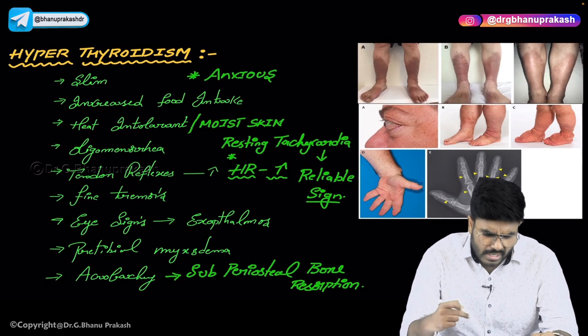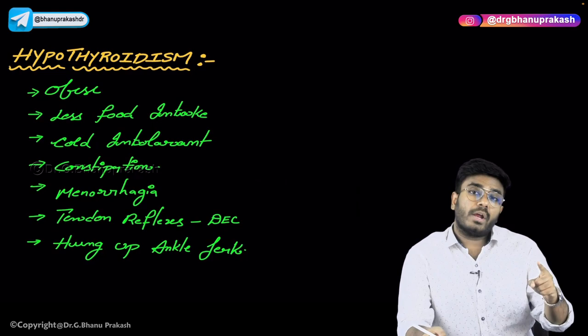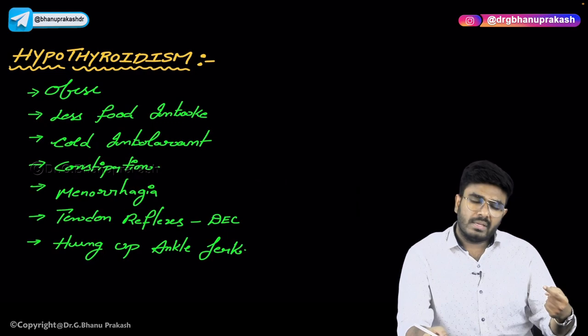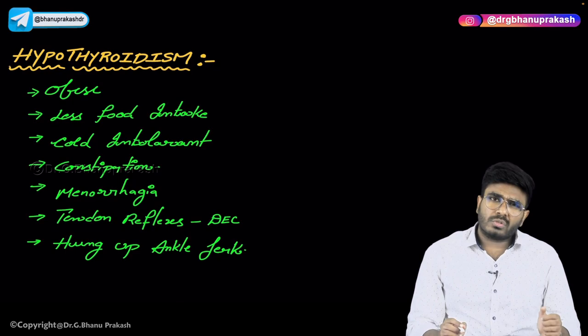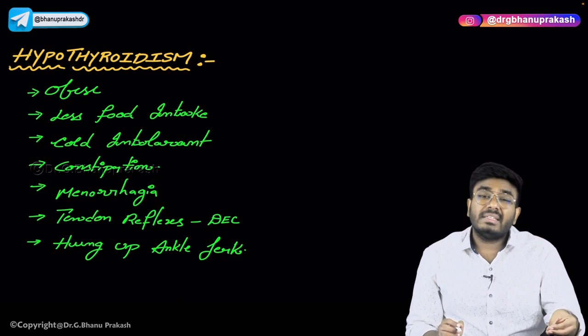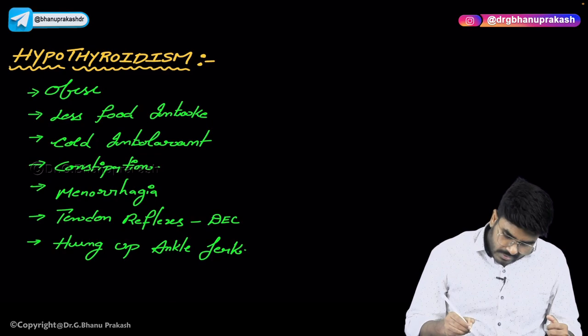Now let's discuss hypothyroidism. Hyperthyroidism patients have an increased basal metabolic rate so they are slim. But in hypothyroidism, there is no T3/T4, so metabolism decreases. The amount of food needed decreases, and these patients will have weight gain — they look obese.